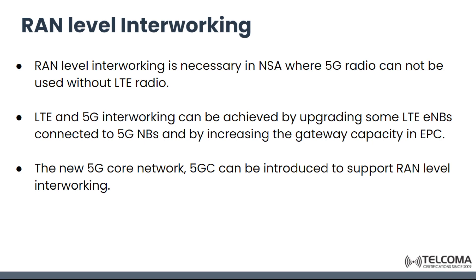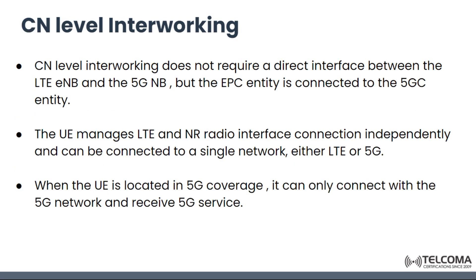User traffic is simultaneously transmitted through the LTE Node B and 5G Node B, or by using the 5G Node B only. RAN-level interworking is necessary in non-standalone mode, where the 5G radio cannot be used without the LTE radio. LTE and 5G interworking can be achieved by upgrading some LTE Node Bs connected to 5G Node Bs and by increasing the gateway capacity in the Evolved Packet Core.